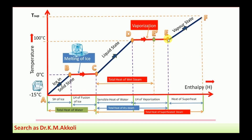At point E, the water is completely converted into steam — that is the saturated steam. If you heat it further, the steam remains in the vapor state but its enthalpy and heat content keep increasing up to the superheated temperature. We can heat it to any temperature within the heating limit, and whatever heat is added beyond the saturated steam is called the heat of superheat.